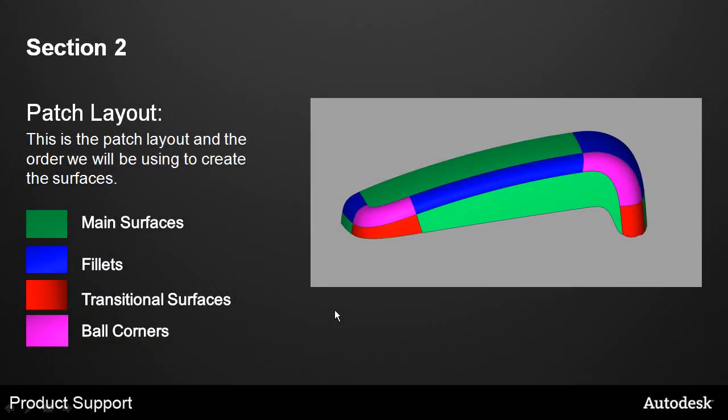Section 2: Patch Layout. This is the patch layout and the order we will be using to create the surfaces. We have the main surfaces, the fillets, transitional surfaces, and the bulk corners. Now we're ready to finish — so let's take a look.